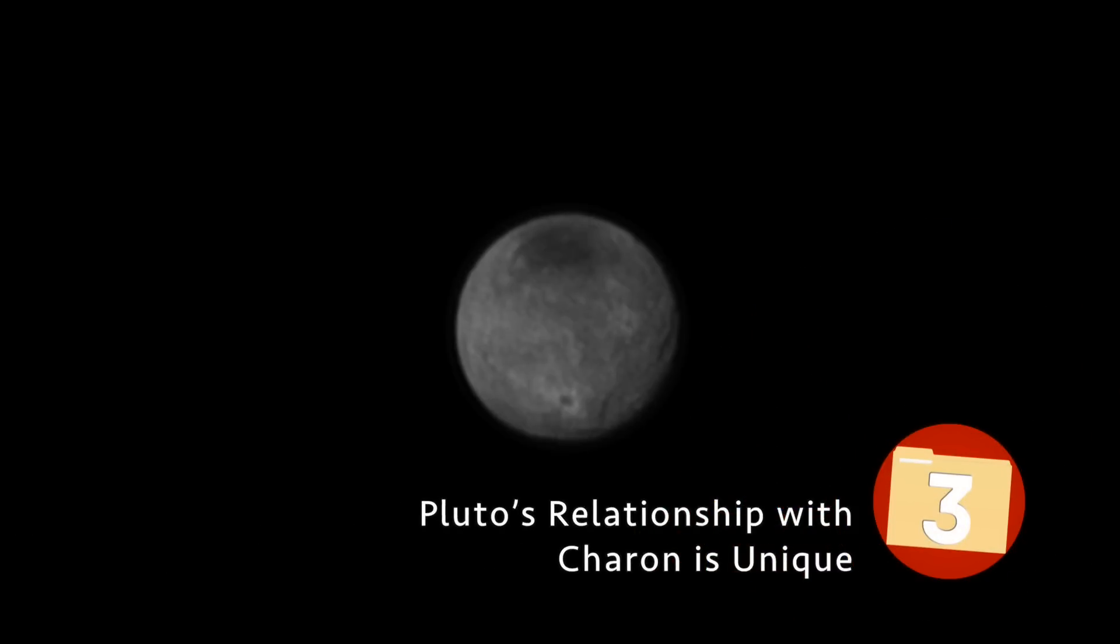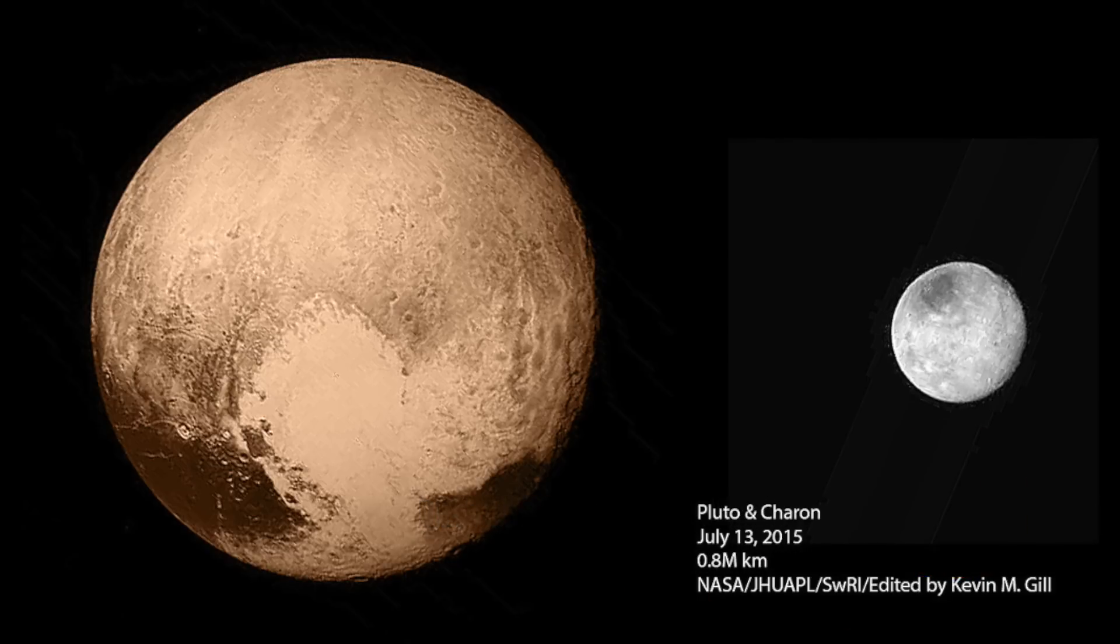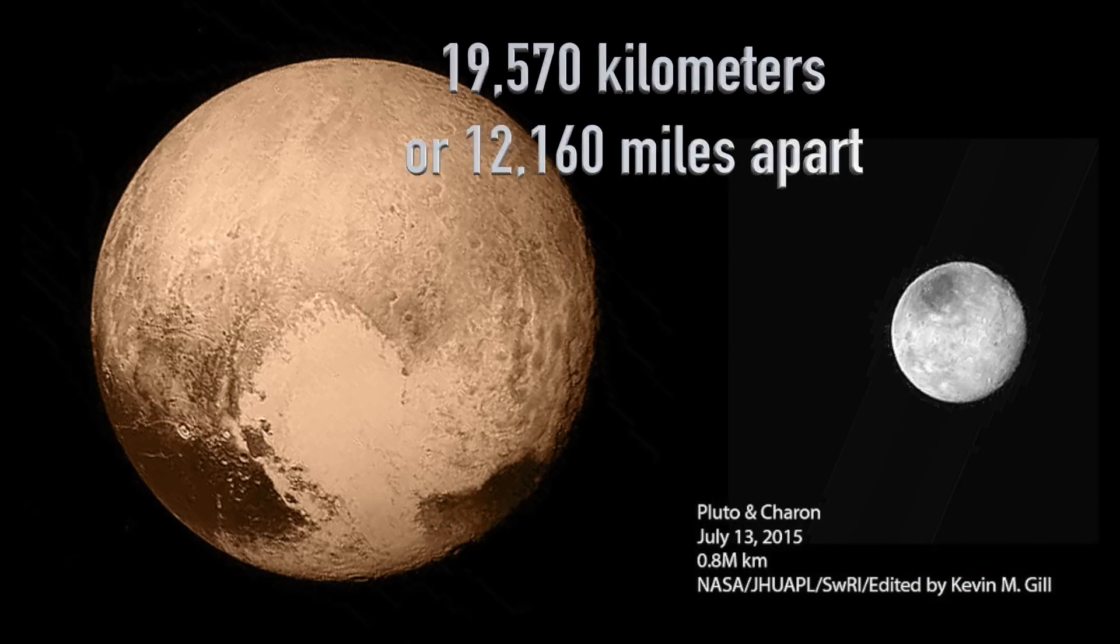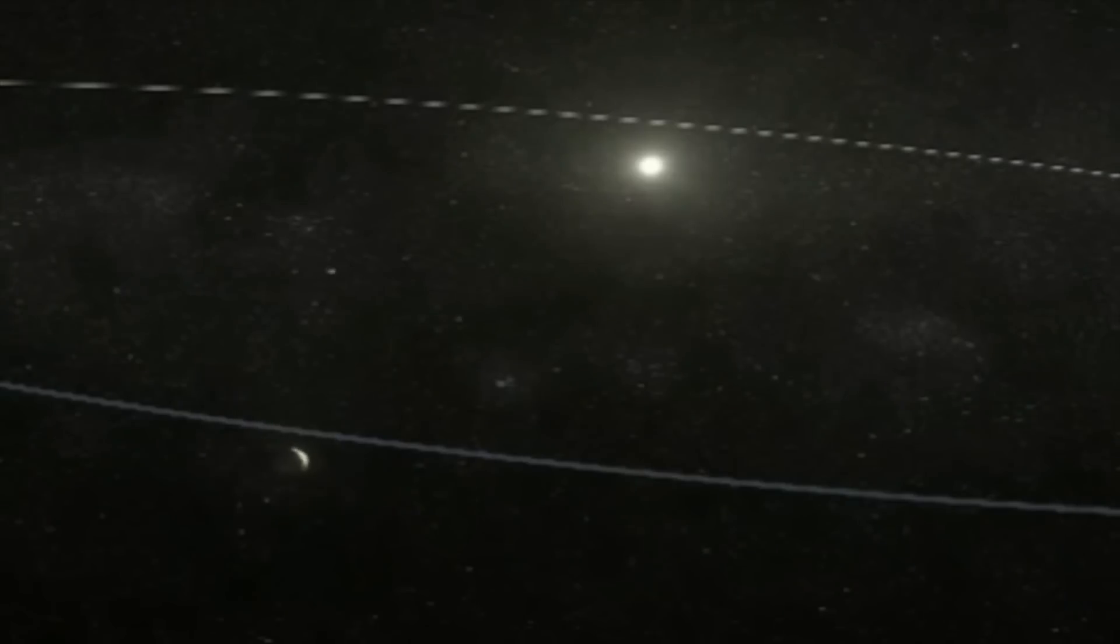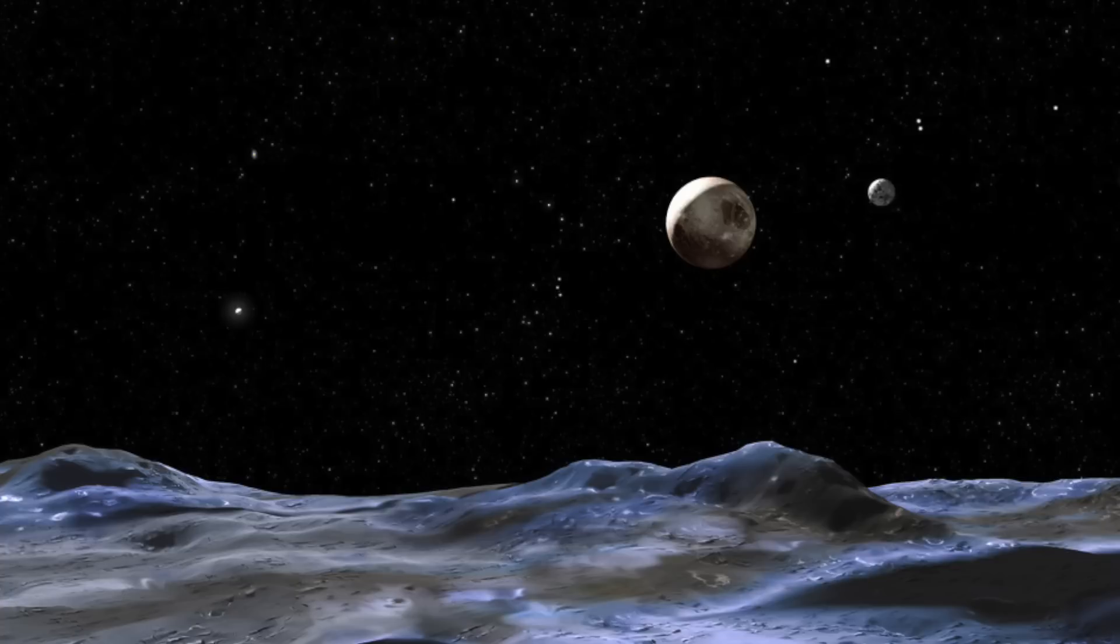Pluto's Relationship with Charon is Unique. Distanced at around 19,570 kilometers or 12,160 miles apart, Pluto and Charon actually have a fairly strong relationship to one another. The two are in a gravitational lock of mutual tidal locking. So, regardless of the time of day, the same face of Pluto is facing Charon and vice versa.